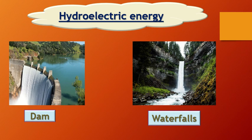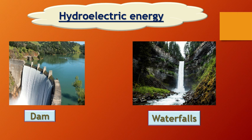Number one: we can use the moving of water in dams and waterfalls from up to down. This movement of water in both dams and waterfalls generates electricity. The electricity produced from dams and waterfalls is called hydroelectric energy. 'Hydro' means water, so we produce electric energy from water.